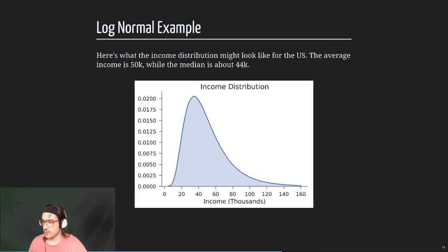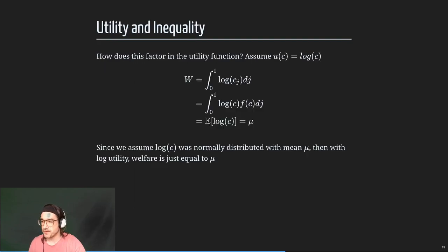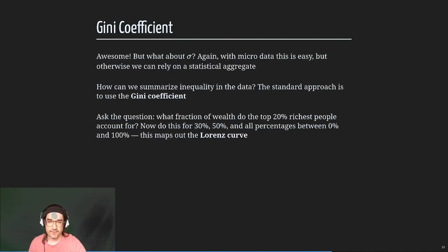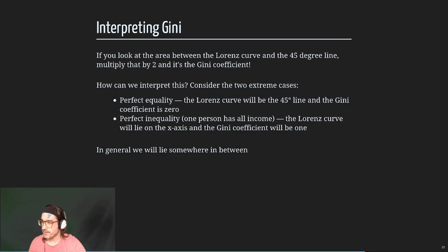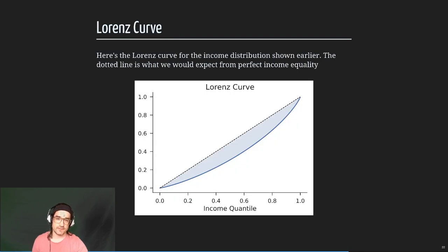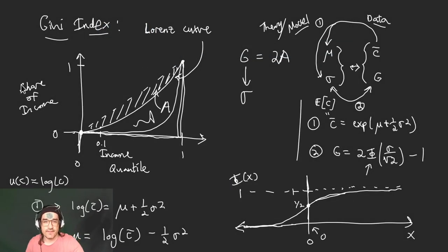Just to recap: we were thinking about this notion of income distribution. It's log-normal in a lot of cases, which gives you heavy tails — a skewed distribution where there's heavy tails on the higher end. We worked through some of the algebra invoking various things about the log-normal distribution that you can prove or look up on Wikipedia. And we introduced the Gini coefficient, constructed geometrically from the Lorenz curve, which gives you an idea of how income shares stack up. From that, we created a mapping between the data — where you can see the average income and the Gini coefficient, C-bar and G — and the underlying theoretical parameters that define our distribution.